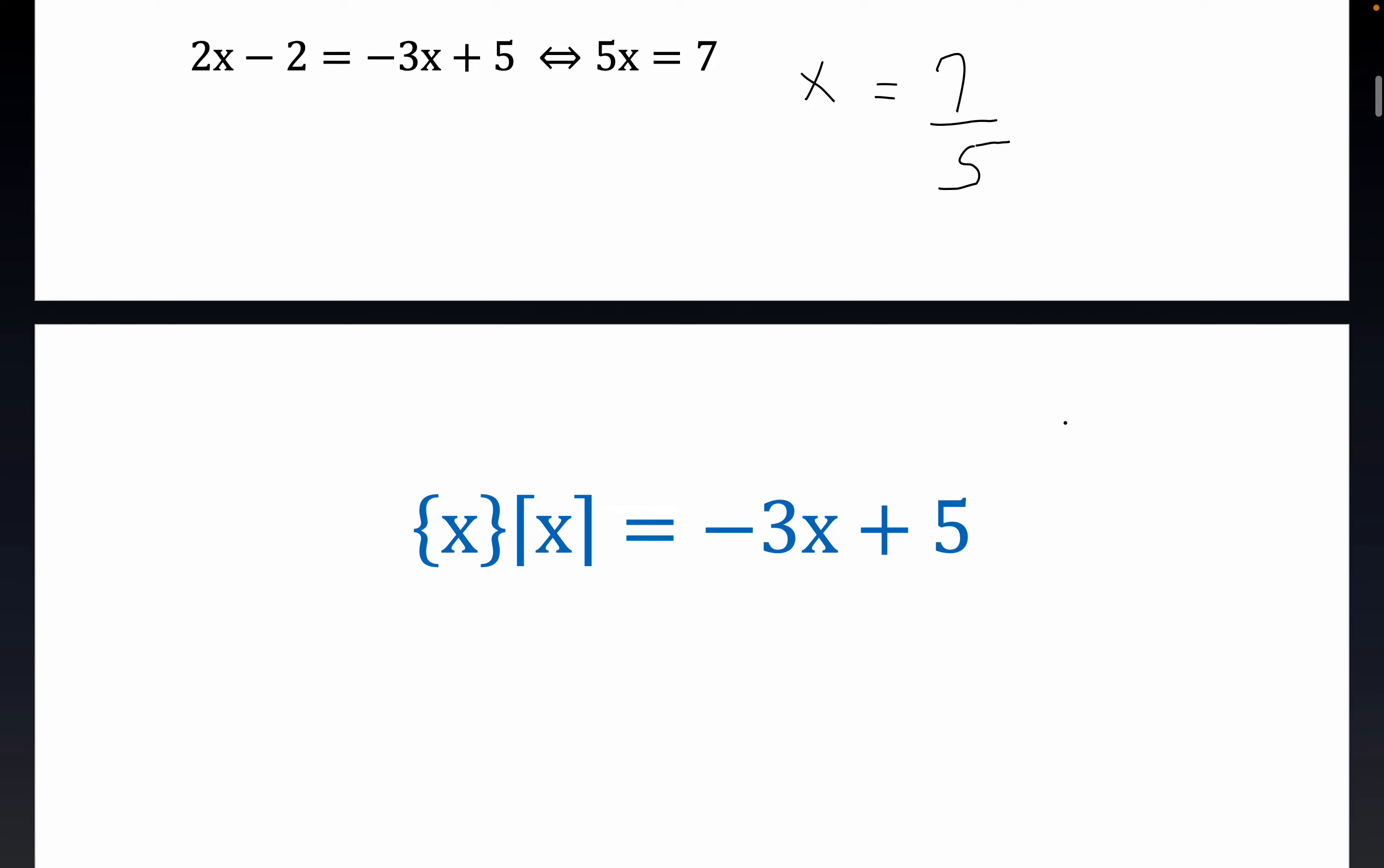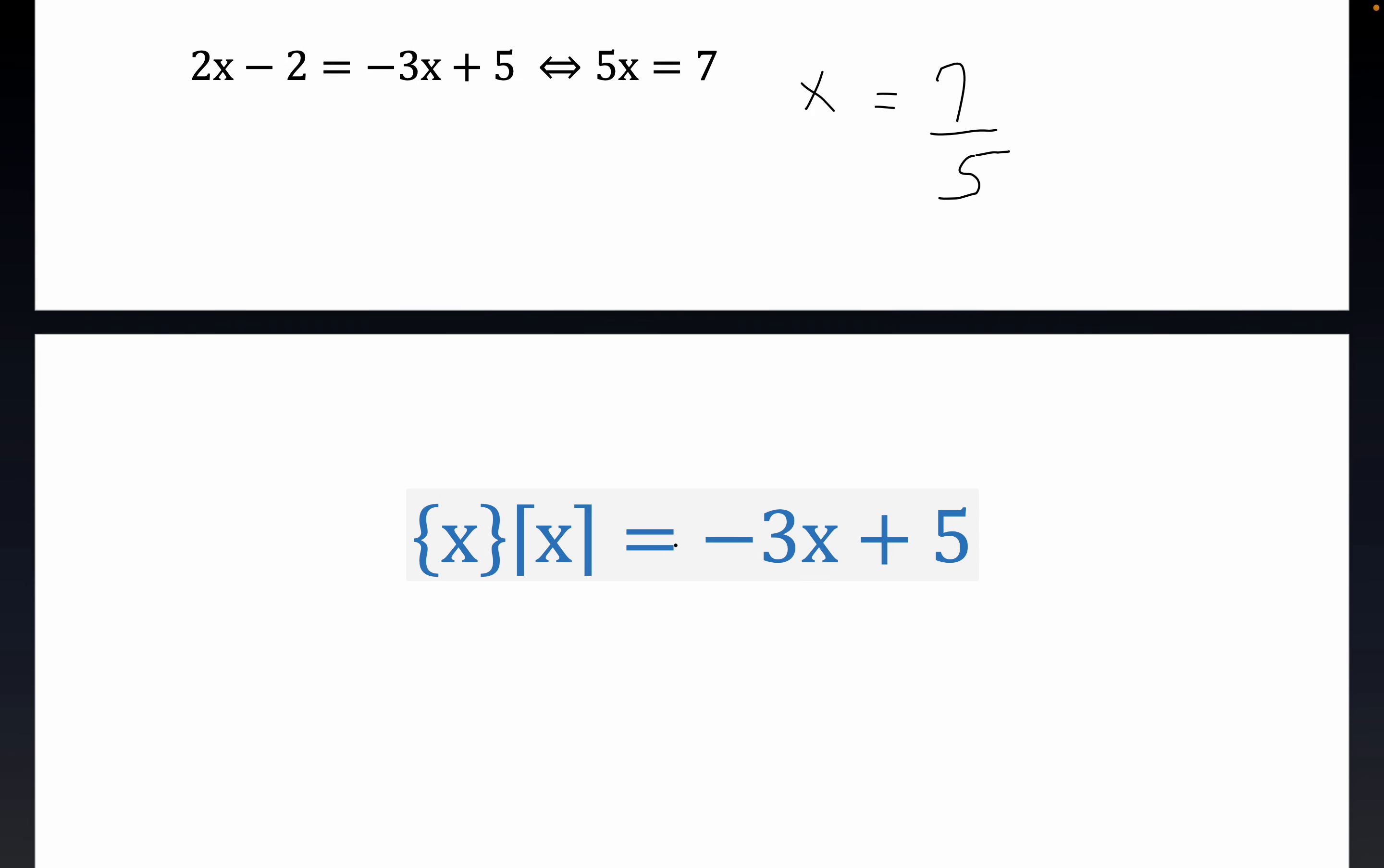Now here's the original problem. So notice that if you take the fractional part of 7 fifths, I'll just write it. The fractional part of 7 fifths is 2 fifths. And the ceiling of 7 fifths is certainly 2.